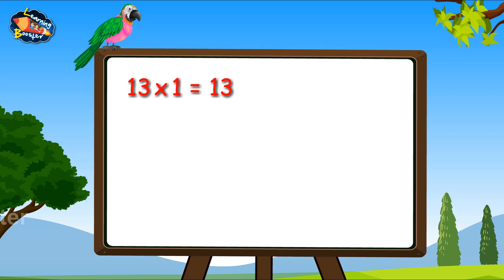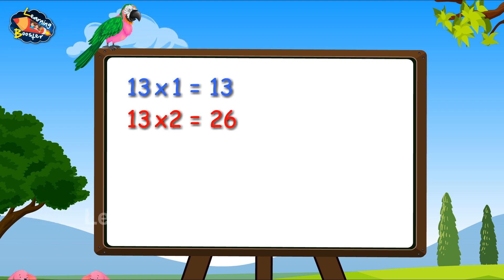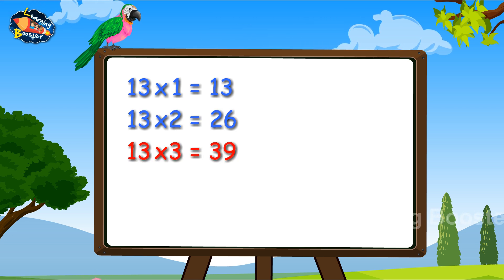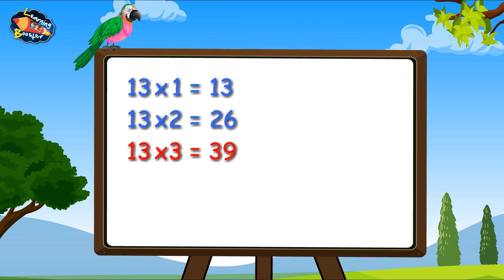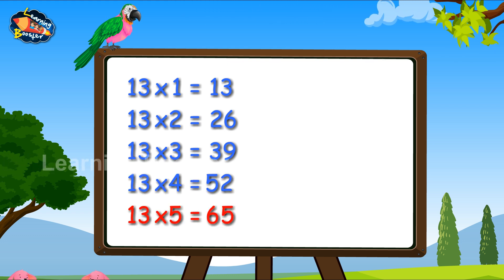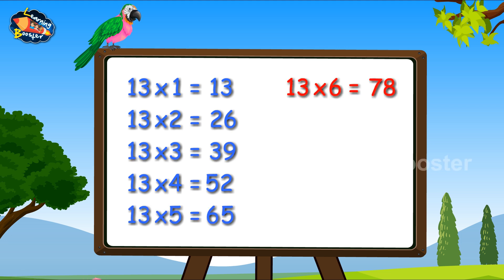13 ones are 13. 13 twos are 26. 13 threes are 39. 13 fours are 52. 13 fives are 65.